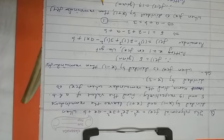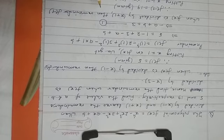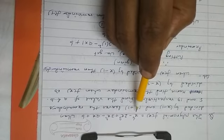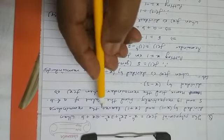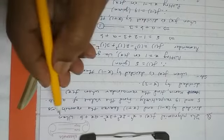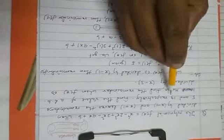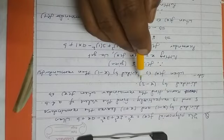We will see how to solve some questions based on the remainder theorem. The polynomial f(x) equals x⁴ minus 2x³ plus 3x² minus ax plus b, when divided by x minus 1 and x plus 1, leaves the remainder 5 and 19 respectively. Find the value of a and b, and hence find the remainder when f(x) is divided by x minus 3.